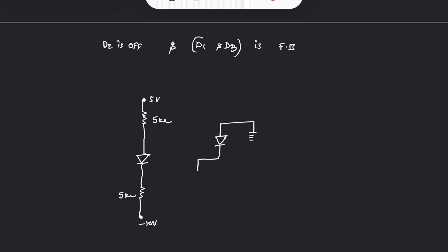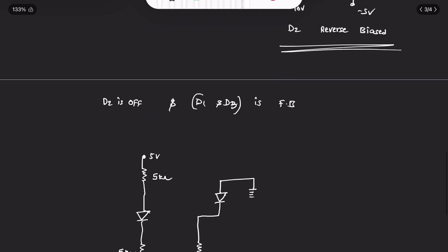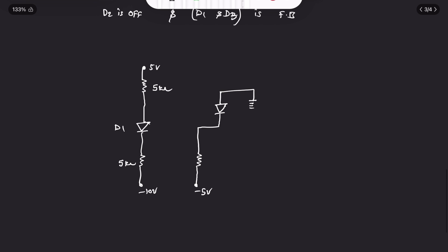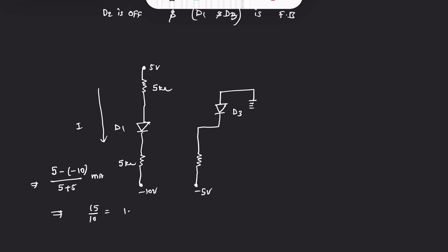Let's check whether D1 and D3 are really in forward biased condition. For D1, if it is forward biased, the current in that branch is 5 minus (-10) over (5 + 5) kΩ, which is 15 over 10, giving 1.5 milliamperes flowing through D1.